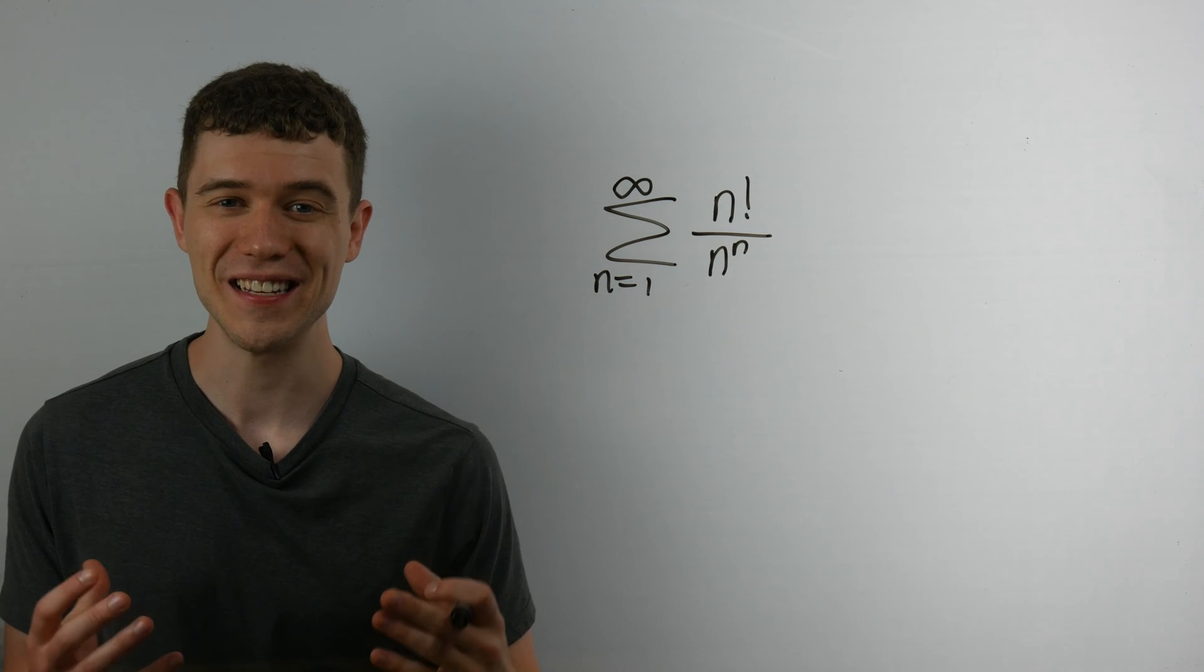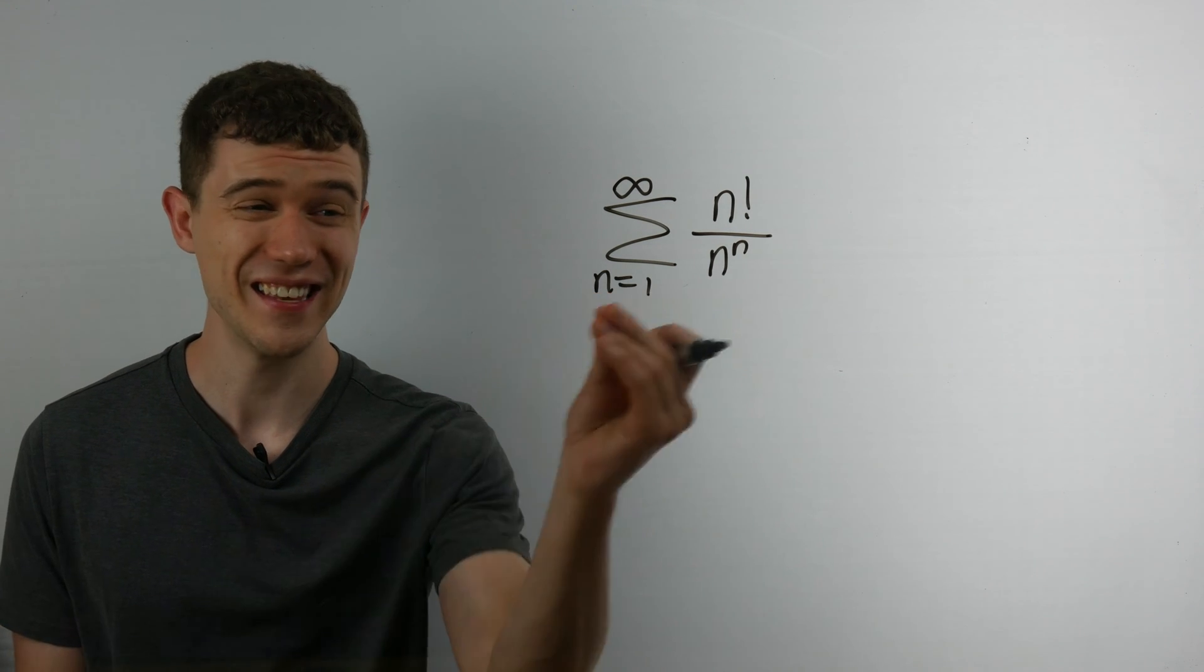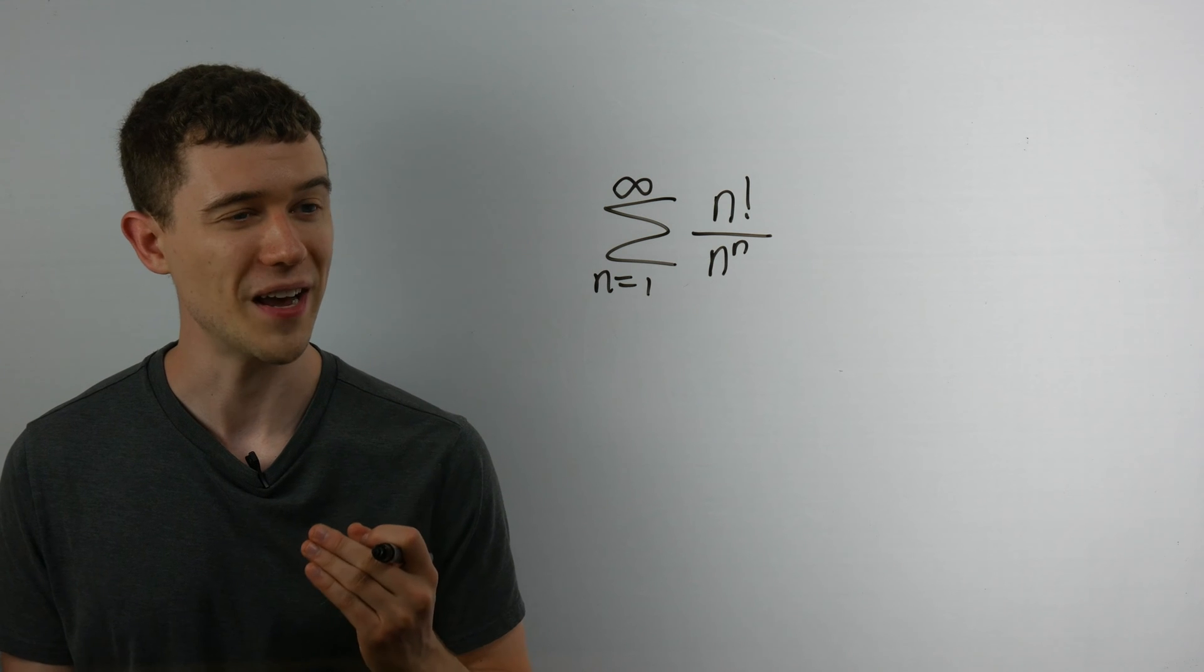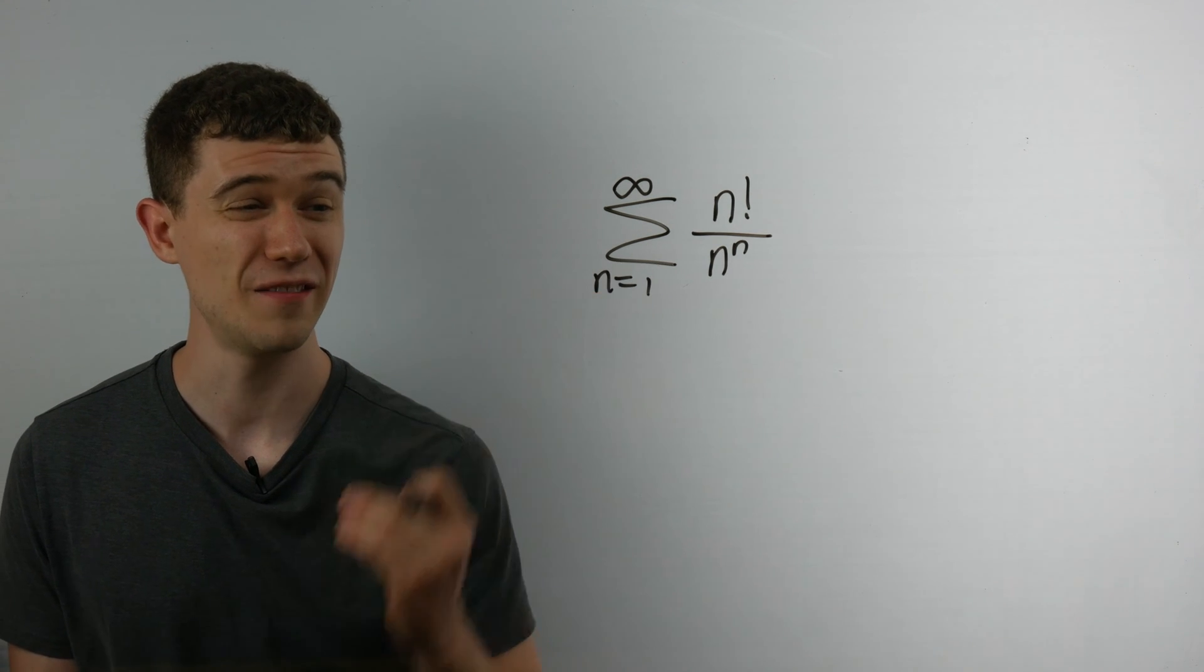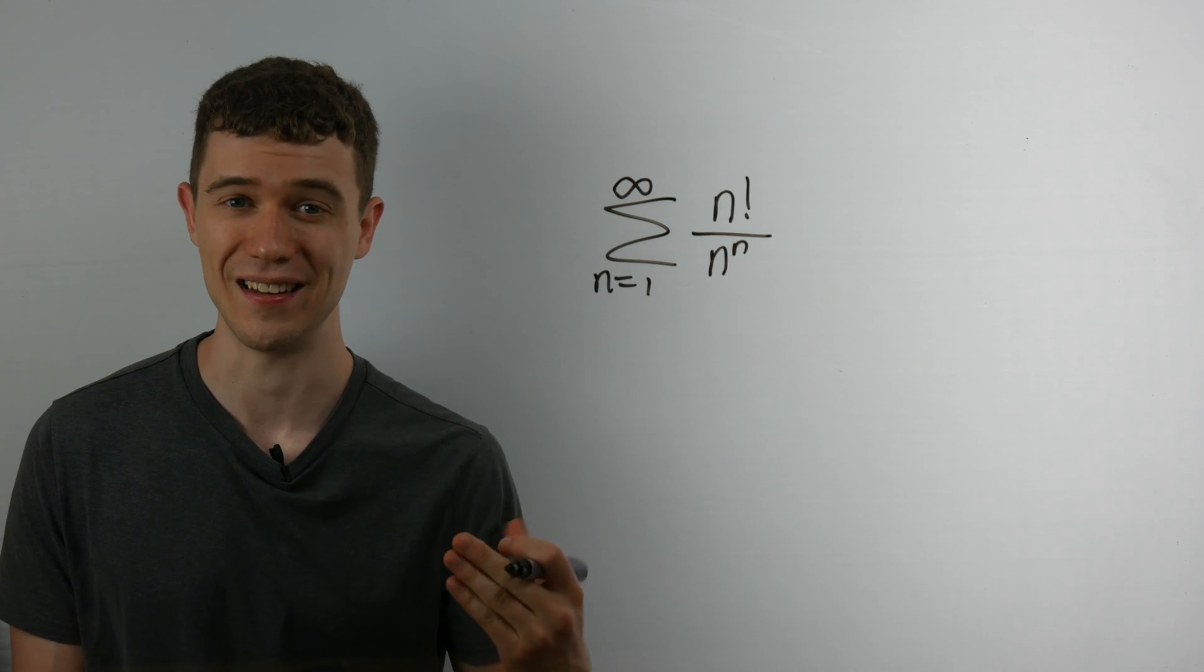Hey everyone, it's Brian. In this video, I wanted to take a look at this series, the sum from n equals 1 to infinity of n factorial over n to the n.